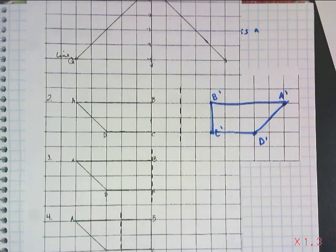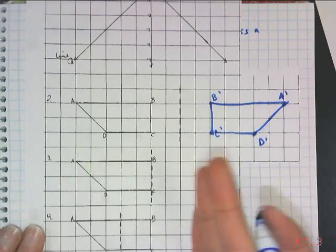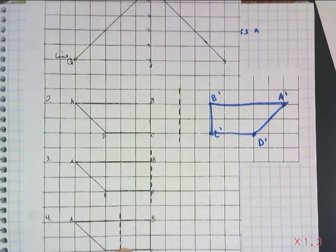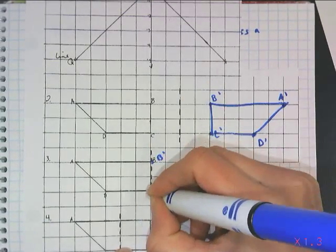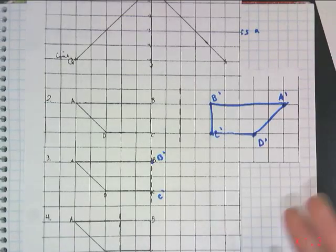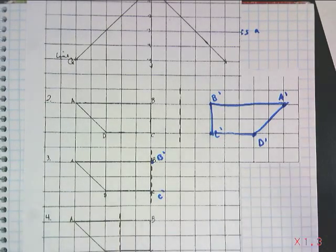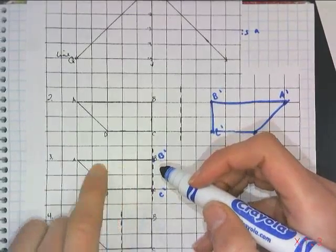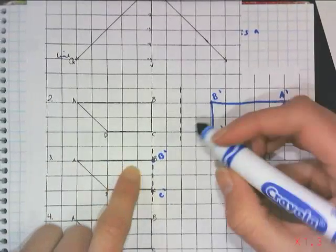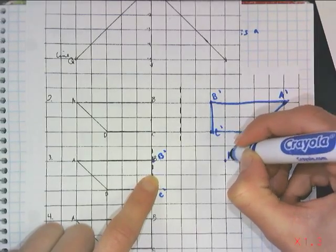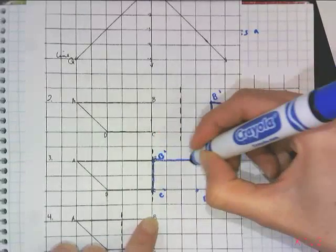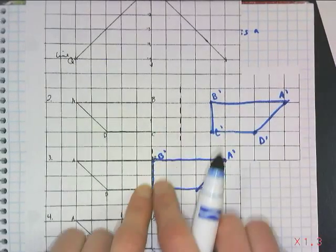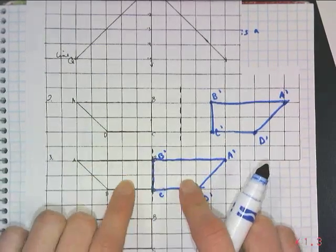Sometimes the line of reflection is part of your figure. When you reflect it over, two points end up in the exact same place — B prime is right on top of B, and C prime is right on top of C. Points on the line of reflection don't have an opposite. Other points, like A, go from 5 to the left to 5 to the right, becoming A prime.